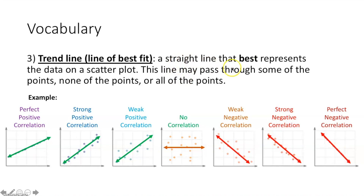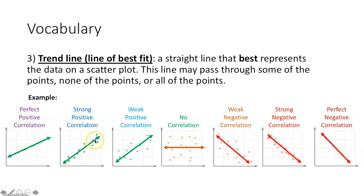A trend line, or line of best fit, is a straight line that best represents the data on a scatter plot. This line may pass through some of the points, none of the points, or all of the points. If the data is going up and to the right, you draw a line through the middle of that data. In a perfect positive correlation, the trend line goes through all of the points. In a strong positive correlation, the data is a little scattered out, so you draw a line of best fit through the middle. In a weak positive correlation, you may not touch any of the points, but you draw the trend line in the middle of that data.